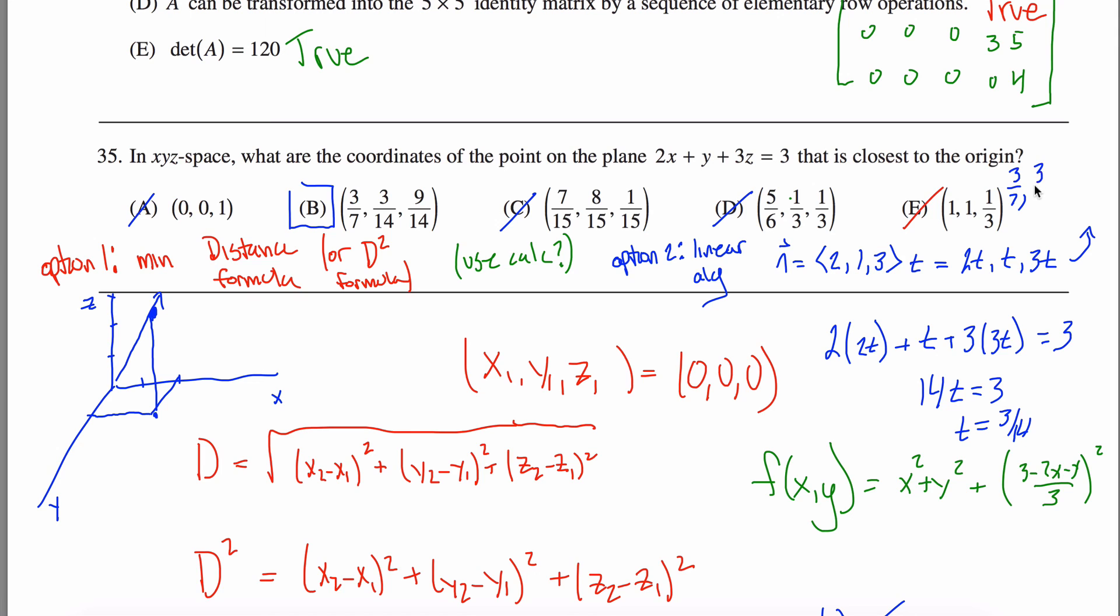And then T, which we found below was three fourteenths. And then three times T. So three times three fourteenths, which is nine fourteenths, which ends up being this answer here.